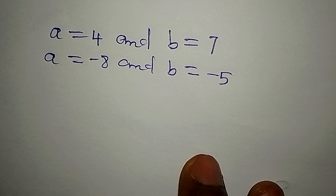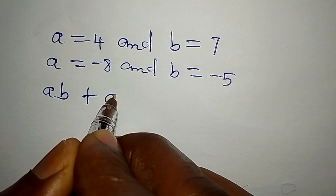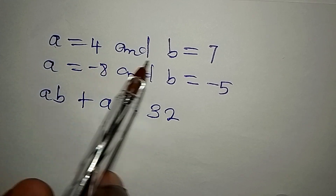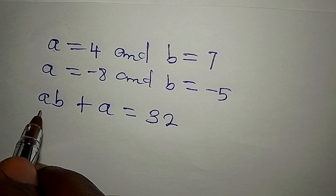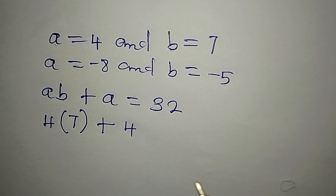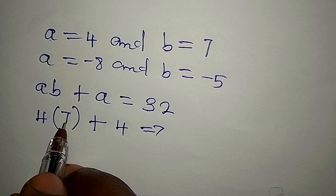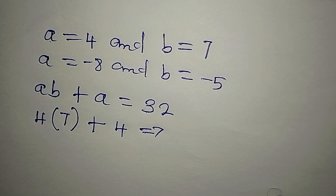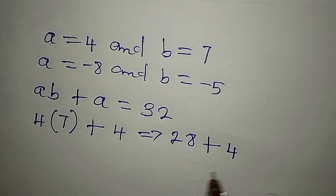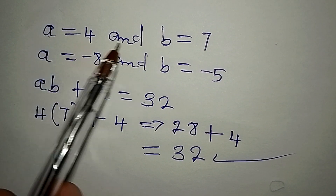Let's confirm using equation 1: AB plus A equals 32. Substituting A equals 4 and B equals 7: 4 times 7 plus 4 equals 28 plus 4, which equals 32. This confirms that A equals 4 and B equals 7 satisfies equation 1.